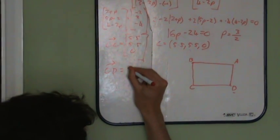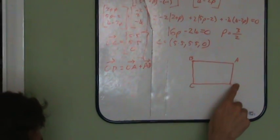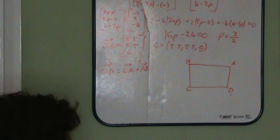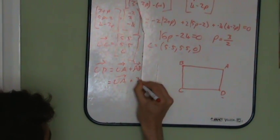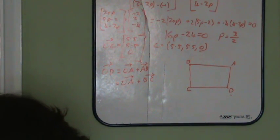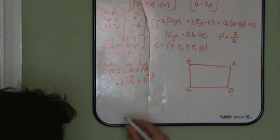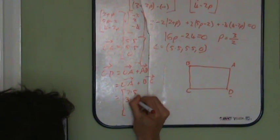We know what BC is — just plug P = 3/2 into the BC expression. We know what OA is. So you just add the vectors together, and you get OD equal to (7.5, 3.5, 4).